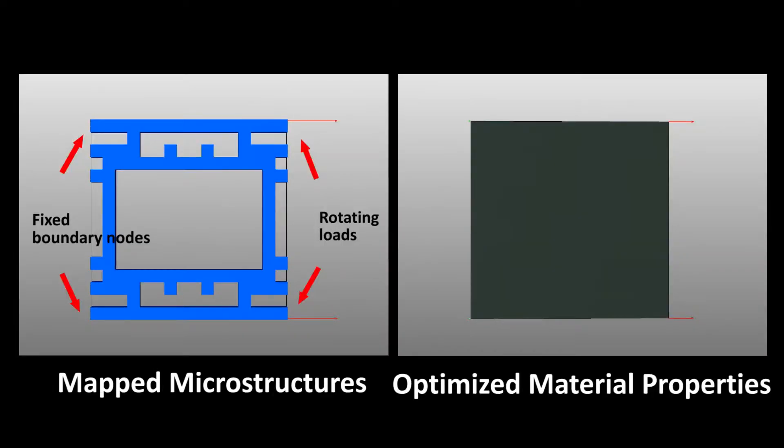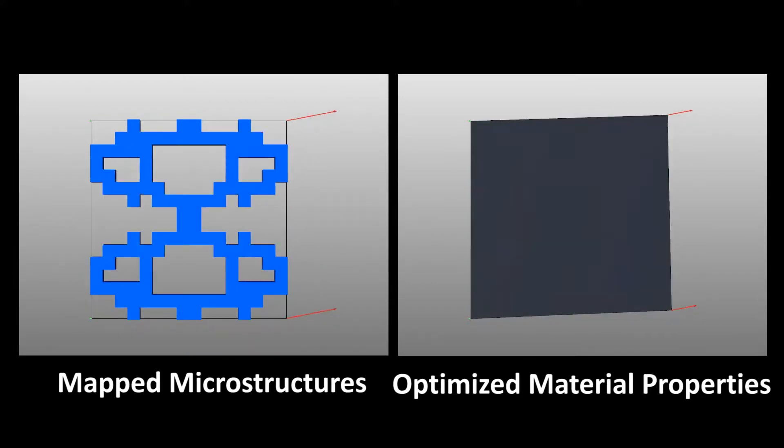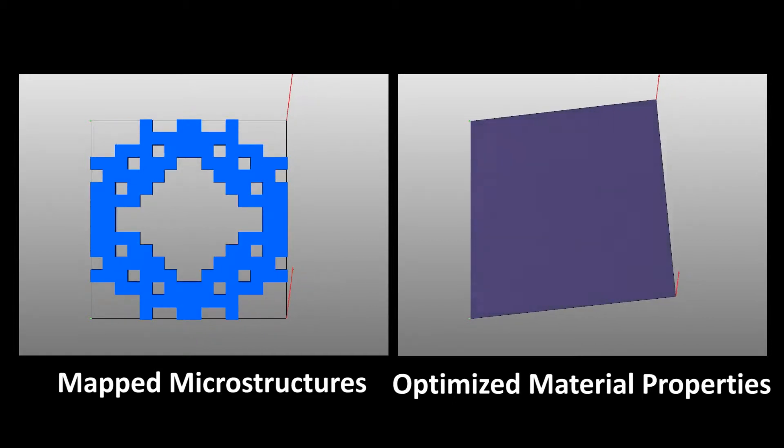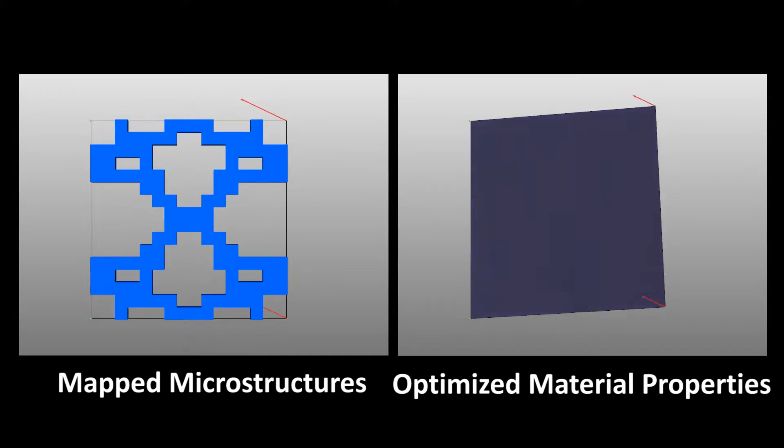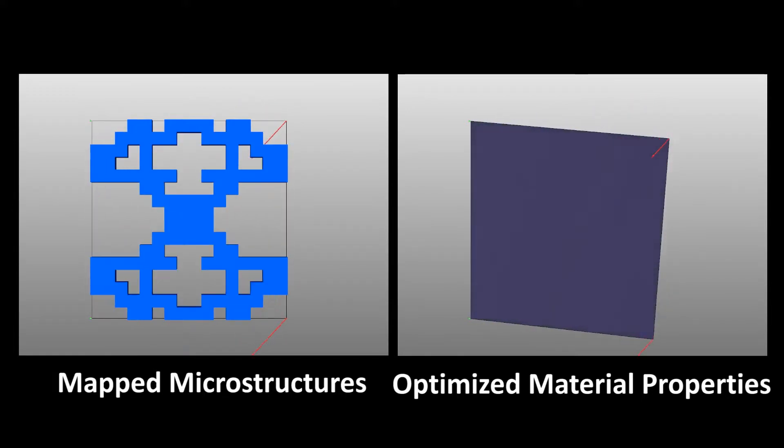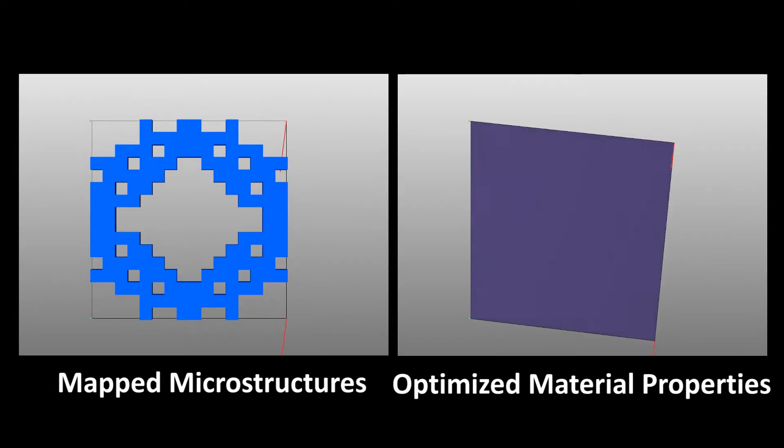We start with a single cell to find its optimal microstructure for minimum compliance. We fix one side of the cell and apply on the other side a load with rotating directions. We show that the optimization algorithm will efficiently find different optimal structures aligned with the different force directions.